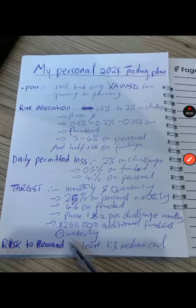We're back with another video. Today I am sharing my personal trading plan for DCA 2024. I have already noticed that out of 100 traders, barely 10 traders have a trading plan, and there's no way you can be a profitable trader without an active and very solid trading plan. You must have a trading plan. If you don't have one, I believe this sample can give you a clue.